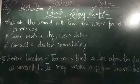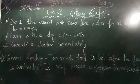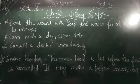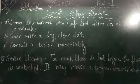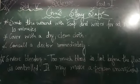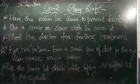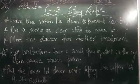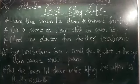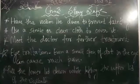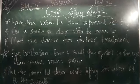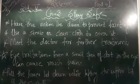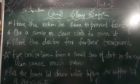Next is severe bleeding — gambhir khoon bahna. Too much blood is lost before the blood is controlled — bahut zyada khoon ka beh jaana, khoon ka rukna nahi. That causes severe bleeding and makes a person unconscious. Treatment: Have the victim lie down to prevent fainting. Use sterile or clean cloth to cover the wound. Meet the doctor for further treatment — kyunki khoon nahi ruk raha toh doctor se treatment karvana chahiye.